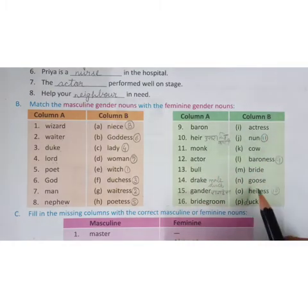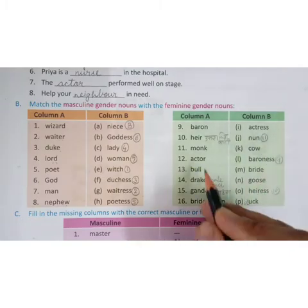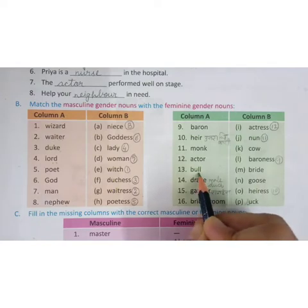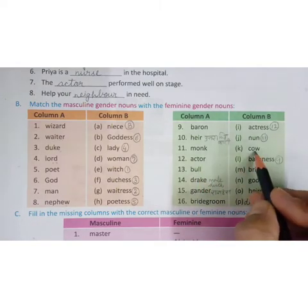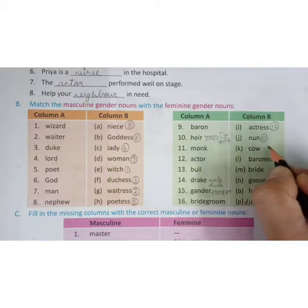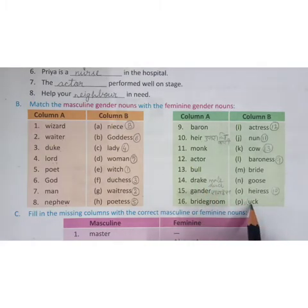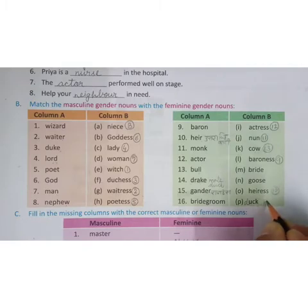Actor's feminine is actress. This is the twelfth answer. Bull means male cow or bull. Bull's feminine gender is cow. So bull's answer is cow. This is the thirteenth answer. Drake is a male duck. Drake's answer is duck. The female duck is just called duck. This is the fourteenth answer.